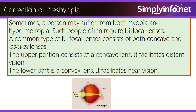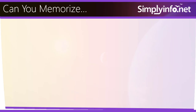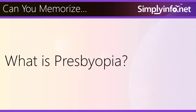A common type of bifocal lens consists of both concave and convex lenses. The upper portion consists of a concave lens, which facilitates distant vision. The lower part is a convex lens, which facilitates near vision.